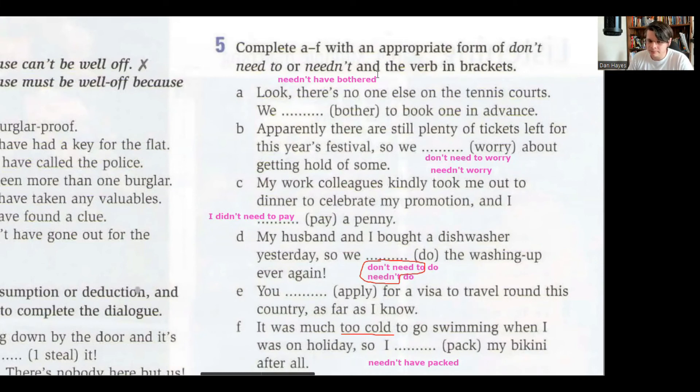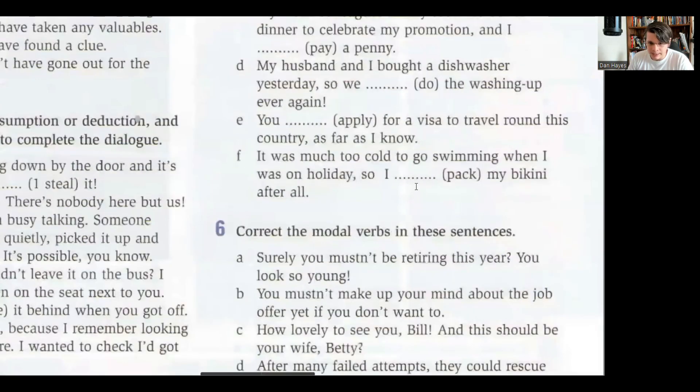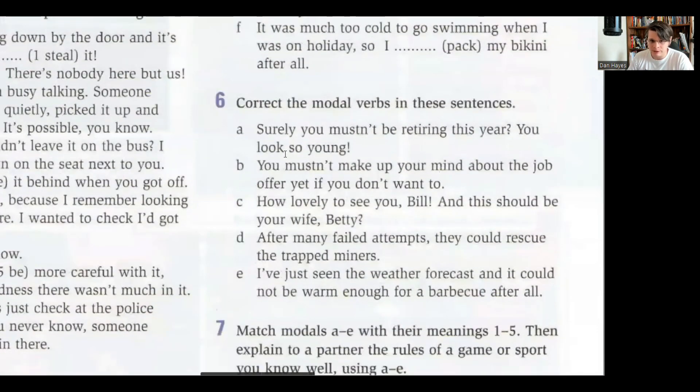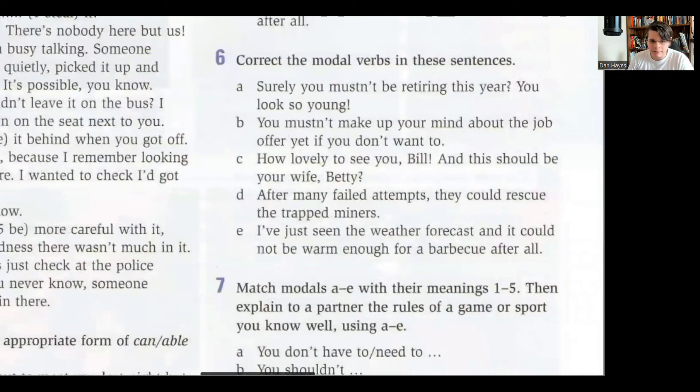Let's move on then. So here we've got some correction work to do, correct the modal verb. So here it says surely you mustn't be retiring - that doesn't make sense. We have to say here surely you can't be retiring this year. No lo veo factible que te jubiles. You look so young. You mustn't make up your mind about the job offer yet if you don't want to. So I would say in this case you don't have to. No te ves obligado, si quieres lo puedes hacer pero you don't have to.